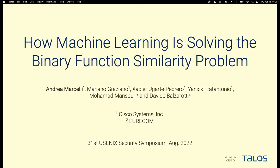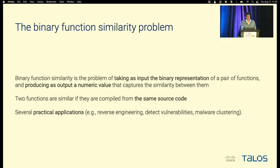This is research done in collaboration with the University of EURECOM. Binary Function Similarity is the problem of taking as input the binary representation of two functions and giving as output a numeric value that captures their similarity. We define two functions as similar if they are compiled from the same source code. It's a very interesting problem with several practical applications in reverse engineering, vulnerability detection, and malware clustering.